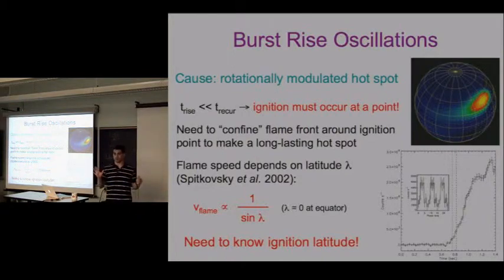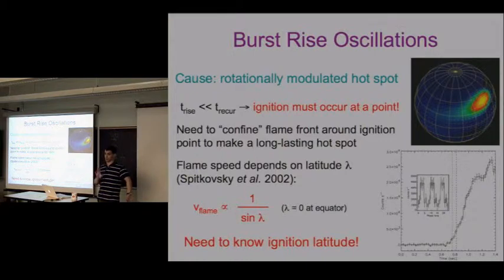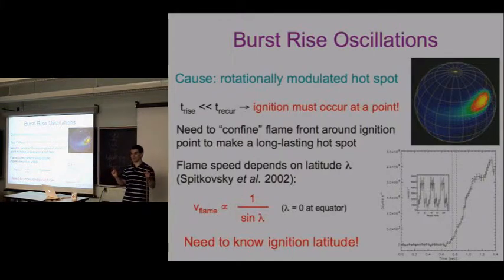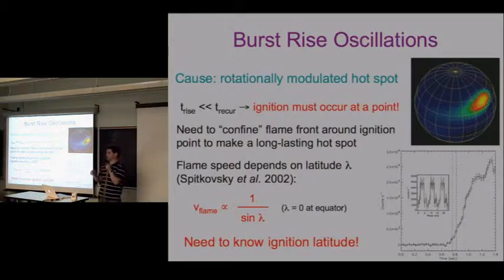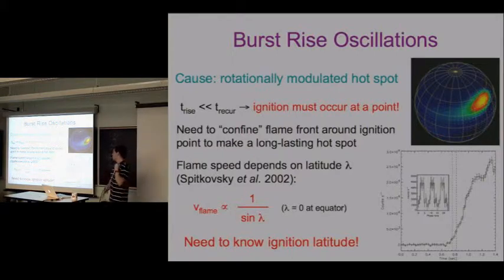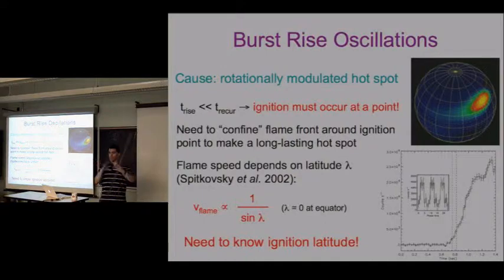The rise time of a burst is about a second or so, much less than the recurrence time of hours to days, so the duty cycle is very small. It's extremely improbable that at each point on the neutron star you'd have a thermal instability within a second. What's much more likely is you have a thermal instability at some point, that matter burns locally, and you have a flame spread across the entire neutron star surface. If you want long-lived oscillations lasting much longer than the rotation period, you need to confine this flame front so the hot spot grows slowly.